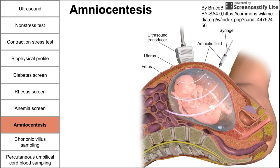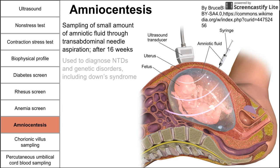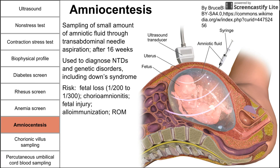Another test that can be done during pregnancy is amniocentesis. It is a sampling of a small amount of amniotic fluid through transabdominal needle aspiration, typically occurring after 16 weeks of gestation. You can use amniocentesis to diagnose neural tube defects and genetic disorders including Down syndrome. However, there is a risk of fetal loss of about 1 in 200 to 1 in 300 procedures, as well as risks of chorioamnionitis, fetal injury, alloimmunization, and early rupture of membranes.